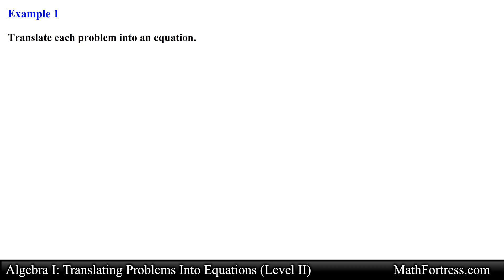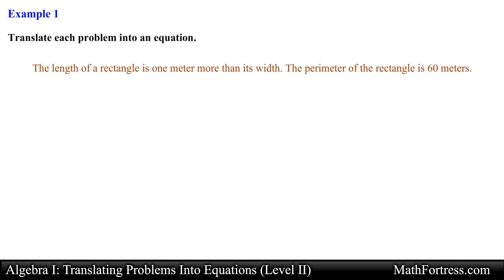Translate each problem into an equation. The length of a rectangle is 1 meter more than its width. The perimeter of the rectangle is 60 meters. In this example we are dealing with a rectangle, so let's go ahead and draw a rectangle to help us visualize and analyze this problem.